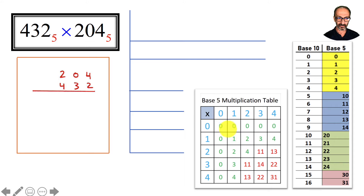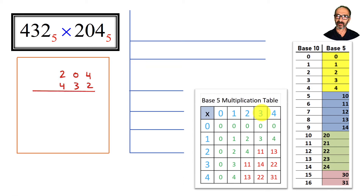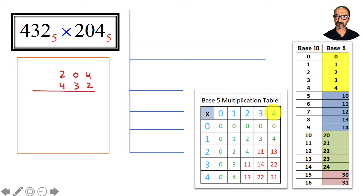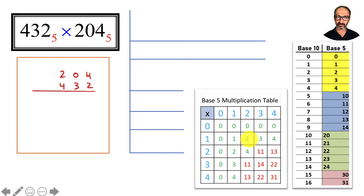I'm keeping some entries in green because 2 times 2 is 4, and 4 is still valid in base 5. 2 times 1 is 2 — I don't need the table for these. But for larger products: 3 times 3 is 9 in our system. How many 5s in 9? Just one 5, with a remainder of 4, so the answer is 14 in base 5. Another one: 4 times 4 is 16. How many 5s in 16? Three 5s and one left over — so the answer is 31 in base 5.